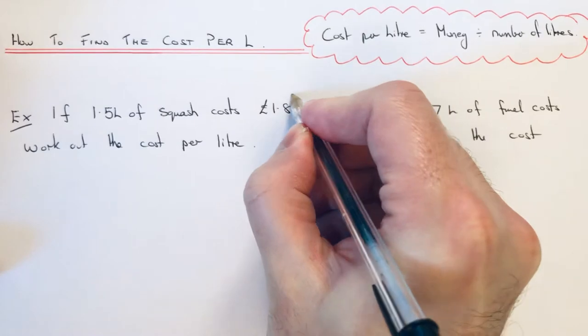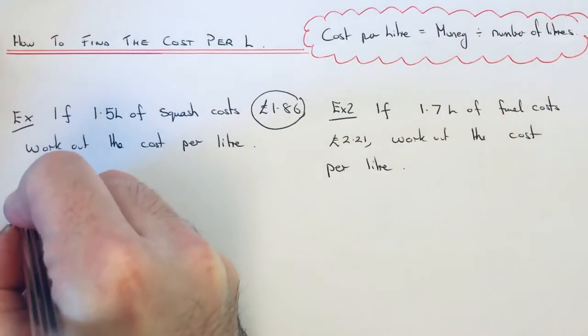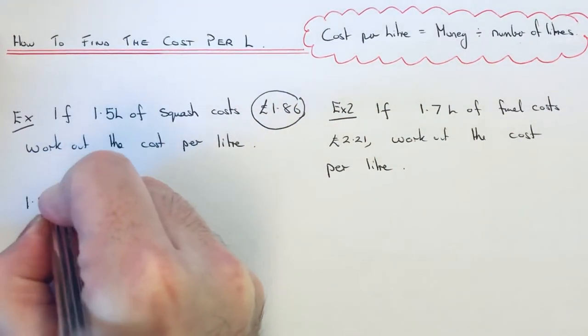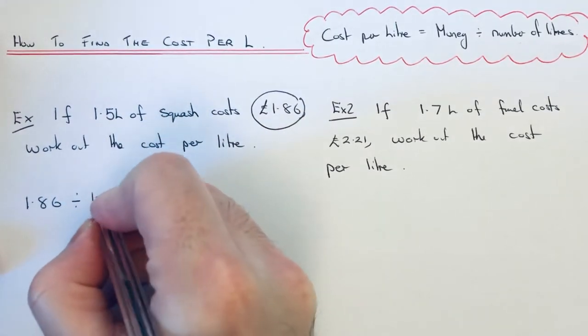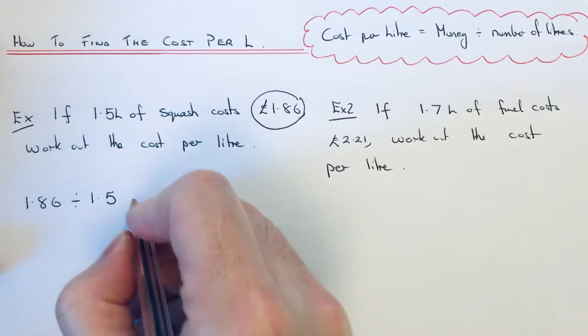All we have to do then is take the money which is £1.86 and we divide it by how many litres we are buying which is 1.5.